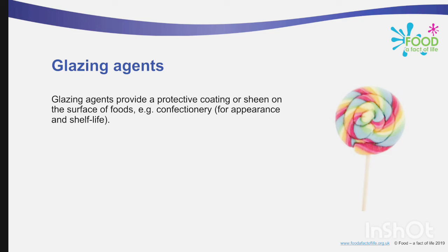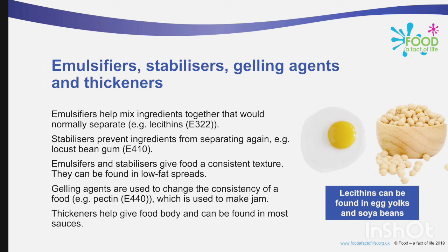Glazing agents provide a protective coating or sheen on the surface of food, for example on confectionery for appearance and shelf-life. Emulsifiers help mix ingredients together that would normally separate — for example lecithin. Stabilizers prevent ingredients from separating again — for example locust bean gum — and together with emulsifiers give food a consistent texture; they can be found in low-fat spreads. Gelling agents are used to change the consistency of a food — for example pectin, which is used to make jam. Thickeners help give food body and can be found in most sauces.